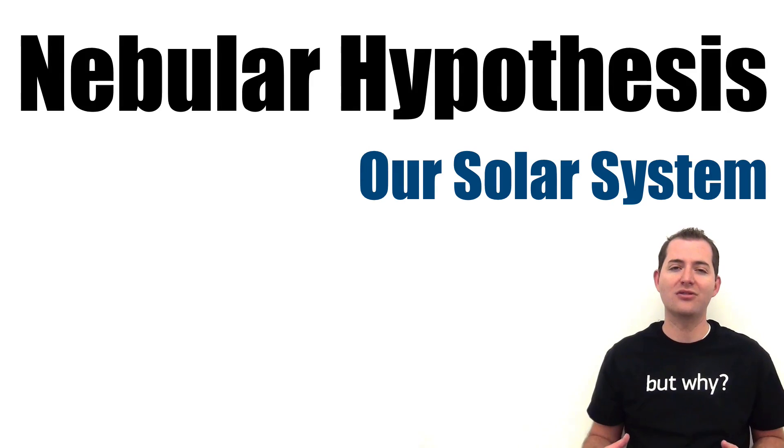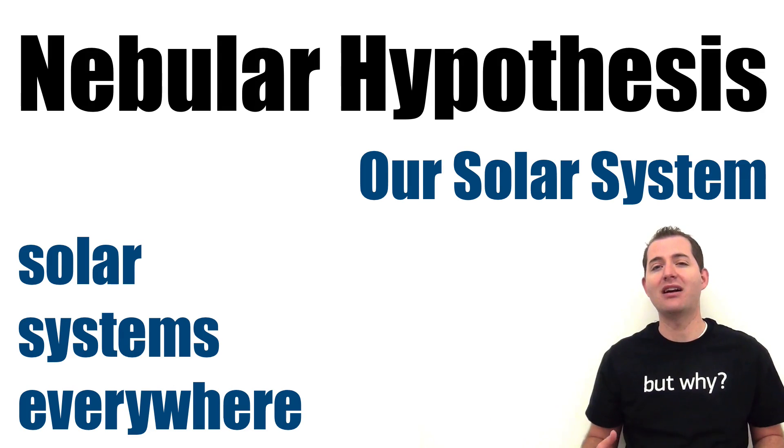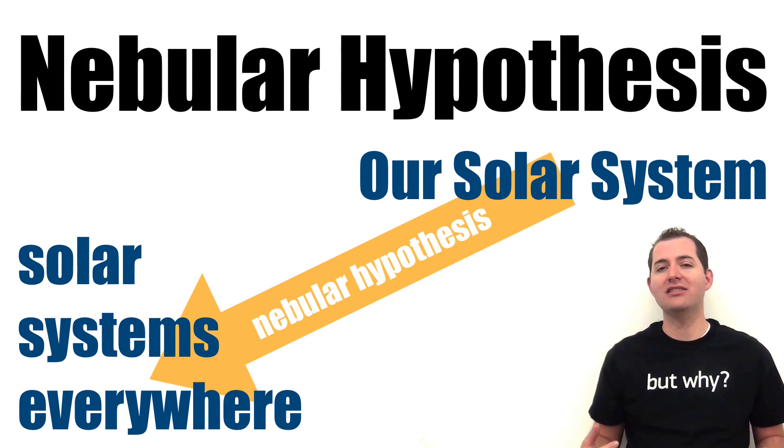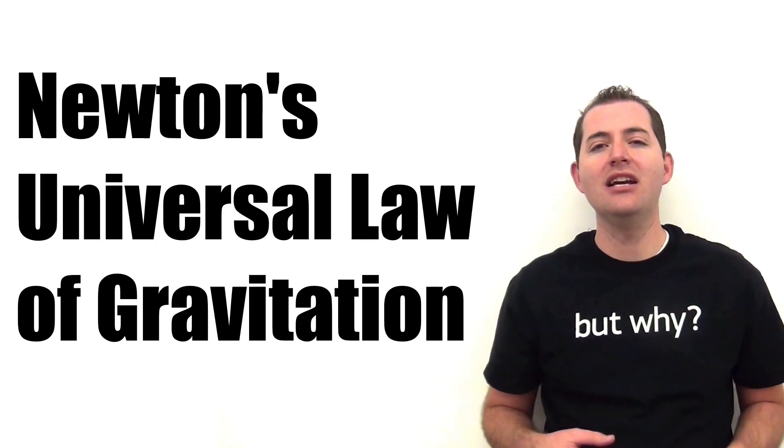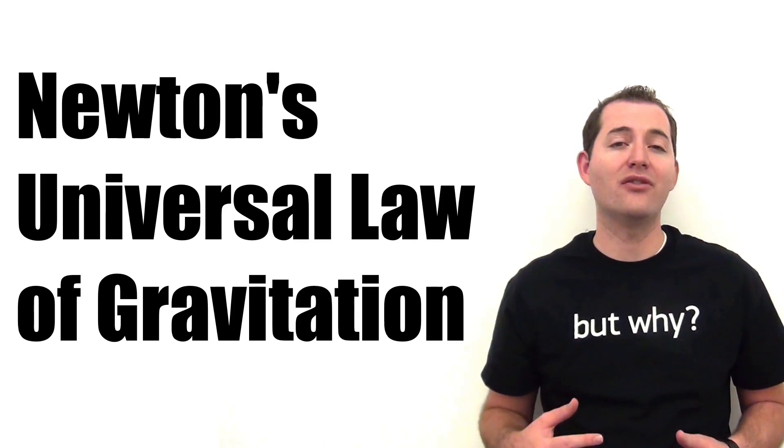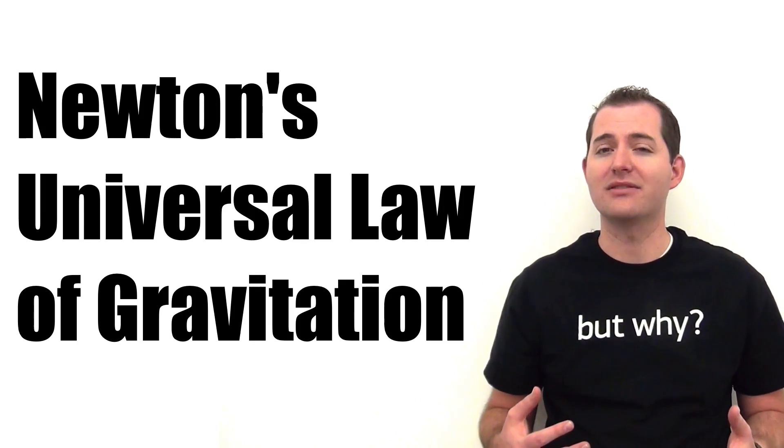All of these processes described in the nebular hypothesis took place in our solar system to form it in the way that it is now. As was stated earlier, it's thought that these processes explain the formation of solar systems and planets throughout the entire universe. As we saw, Newton's universal law of gravitation plays a key and important role in the formation of stars, planets, and solar systems.